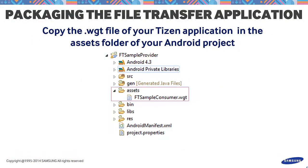Now that we have our applications — Android and Tizen respectively — we can start packaging our application together. In your Tizen application, there will be a file with a .wgt file name extension. Simply copy and paste it in the assets folder of your project. The reason for this is that the application we developed is an integrated type application, which means that the application will be simultaneously installed in the Galaxy Gear device upon installing the SAP service to the Android device.